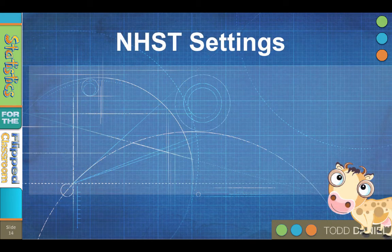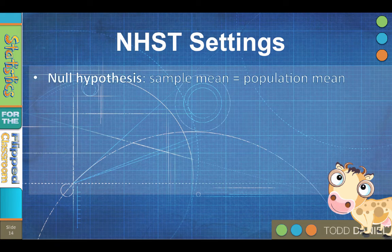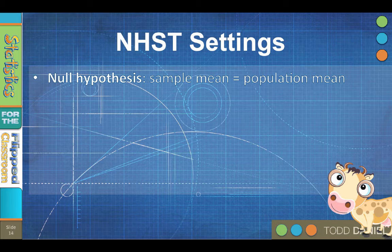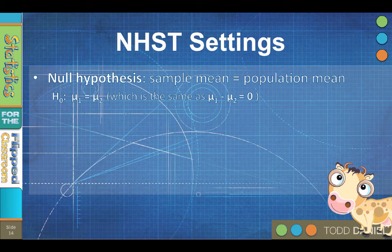Here are the settings for null hypothesis significance testing. The null hypothesis is that the sample means equal the population mean. Or said more accurately, each sample is drawn from the same population. Or drawn from populations whose means are equal. So here is how you would write your null hypothesis. H sub 0, colon, mu1 equals mu2. Which is the same as writing mu1 minus mu2 equals 0.